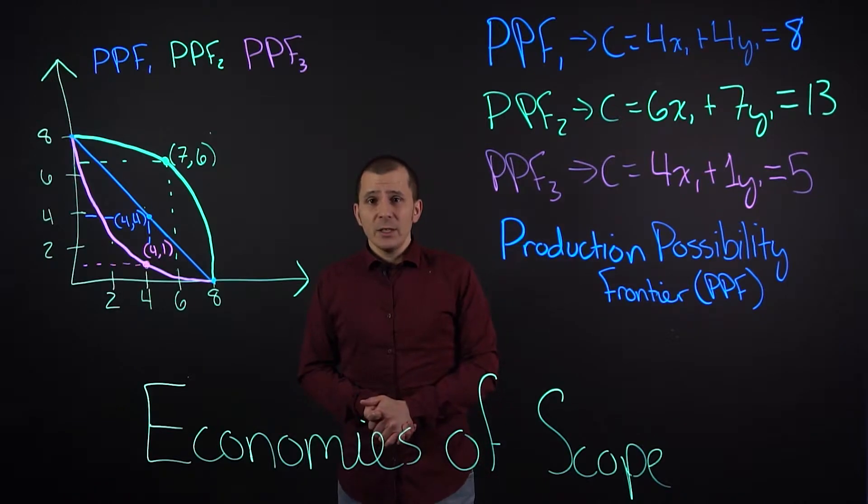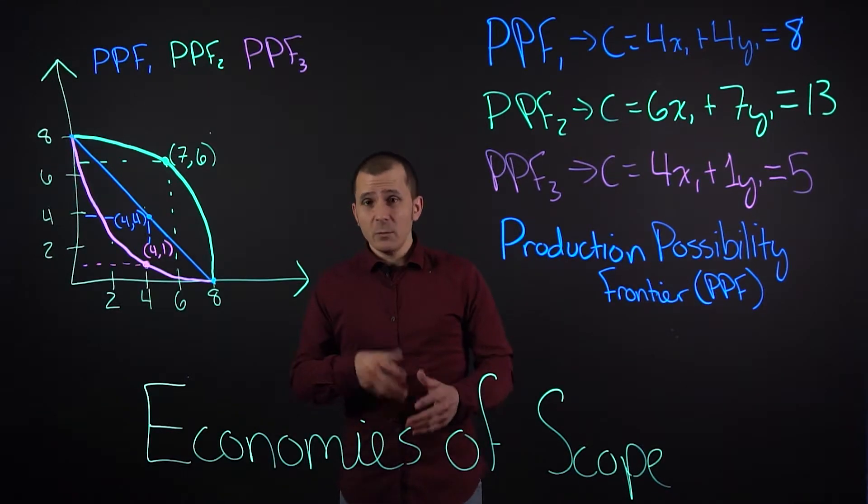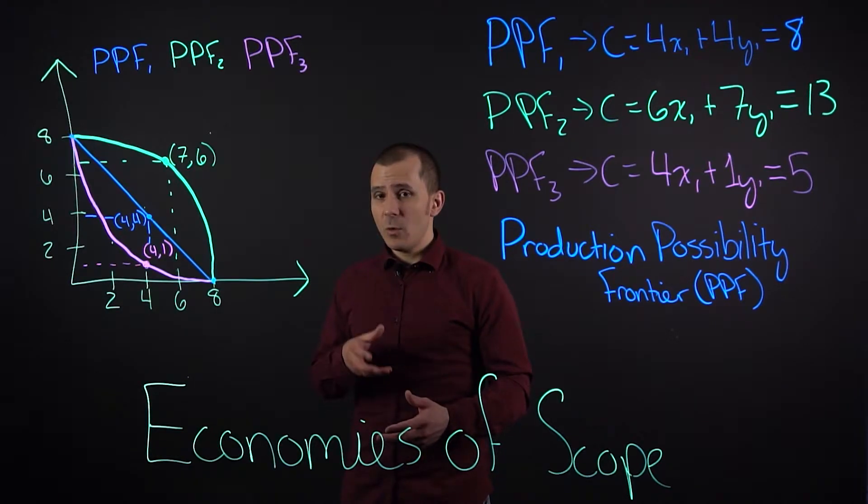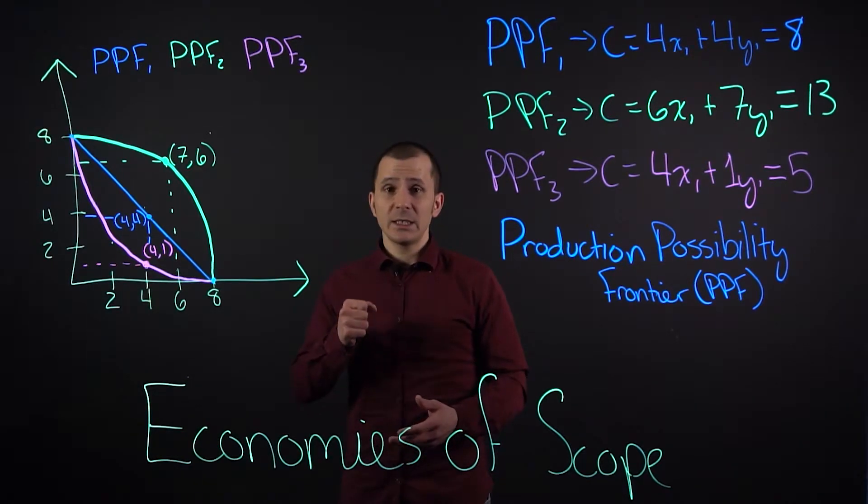An economy of scope happens essentially when a company produces multiple products as opposed to one product or a specific industry.